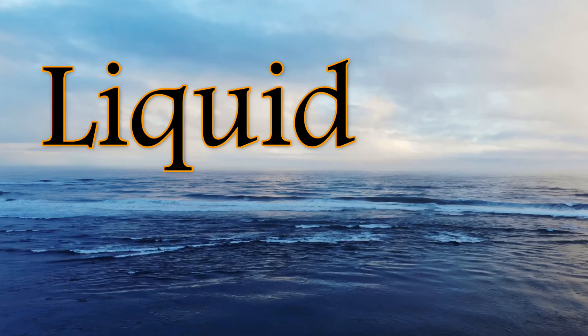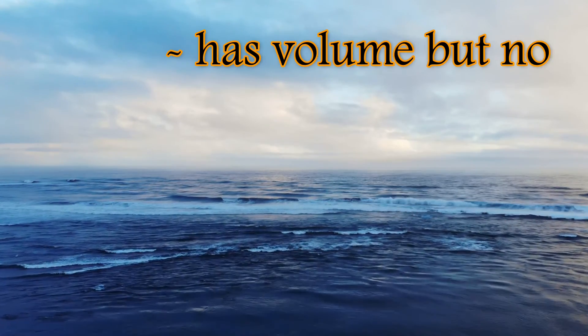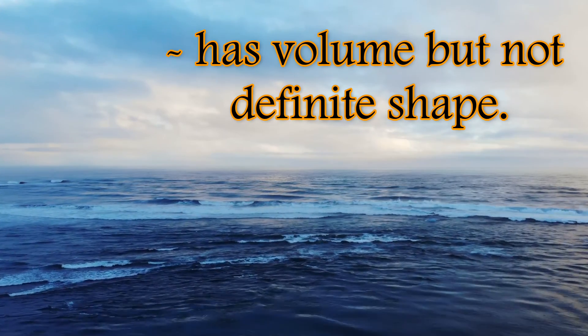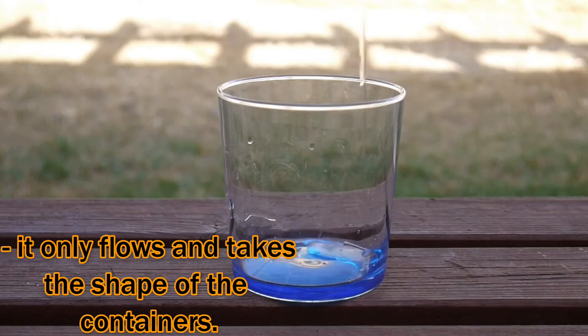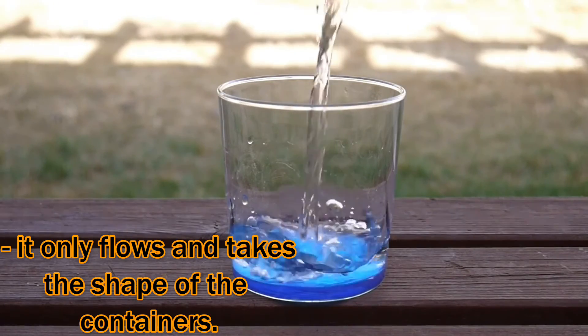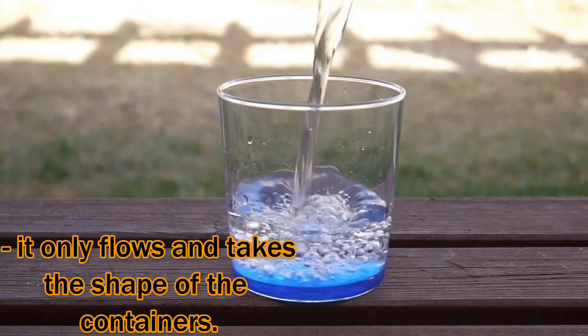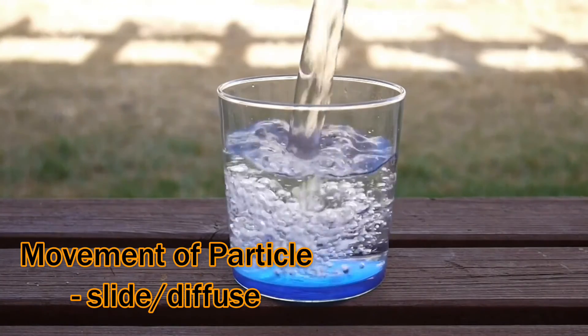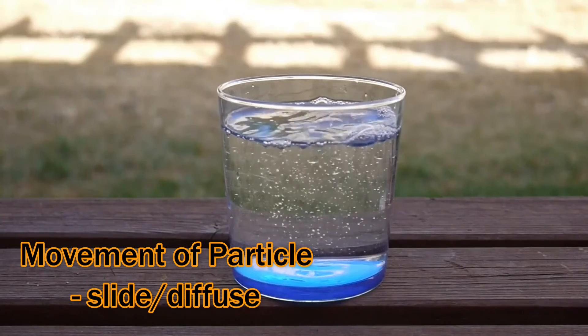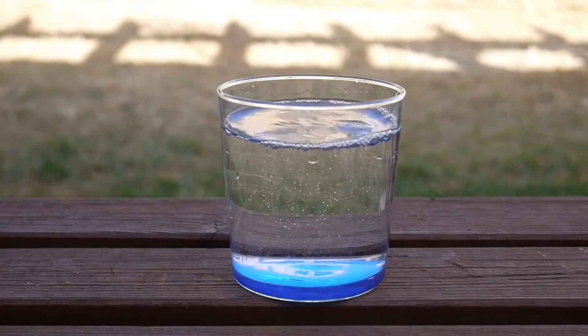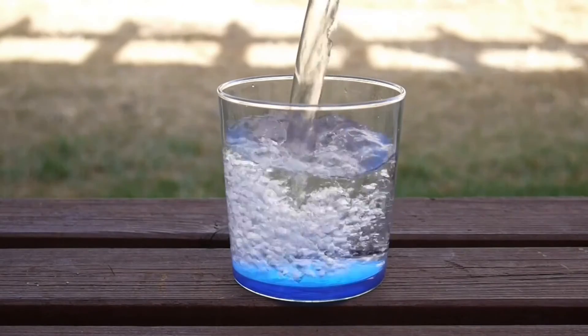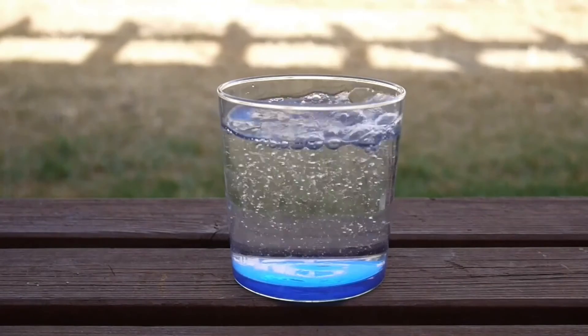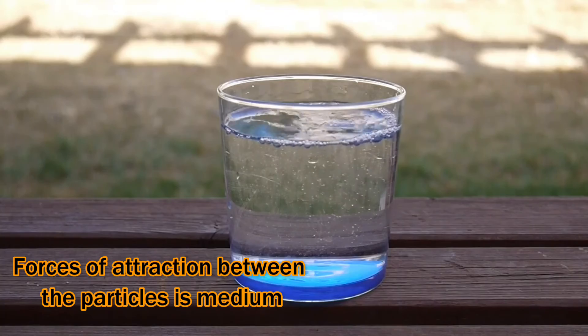Next is liquid. Liquid has volume but not definite shape. It only flows and takes the shape of the containers. The movement of particles in liquid can be slight or diffuse. The particle spacing in liquid is loose and the forces of attraction between the particles is medium.